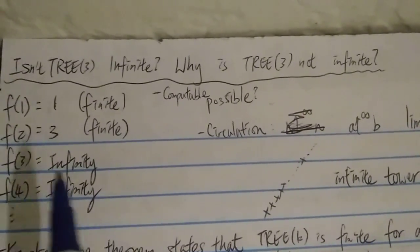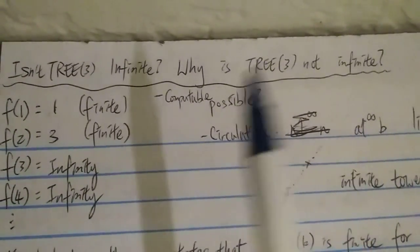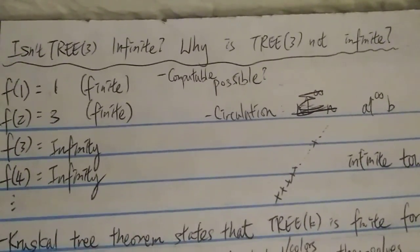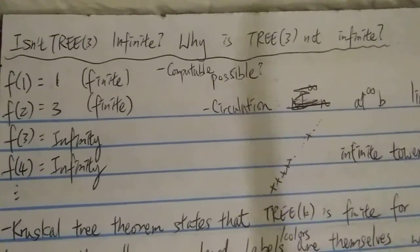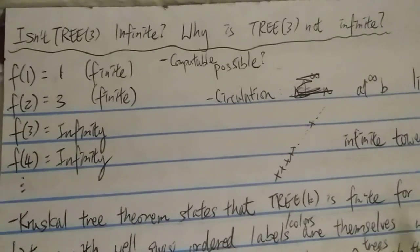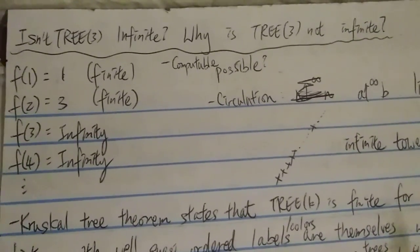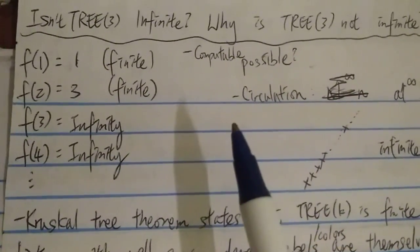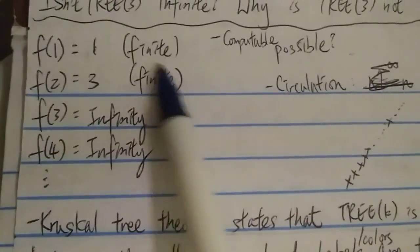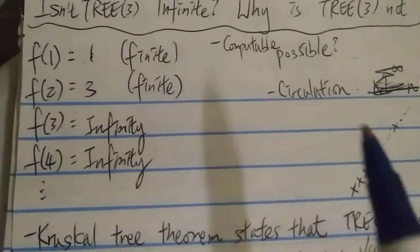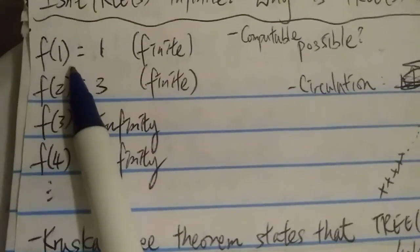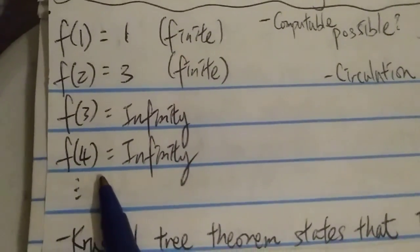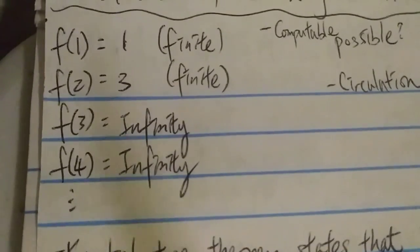Today we're going to talk about why TREE(3) is not infinite. This is something frequently asked by commenters online, because TREE(3) seemingly is so much bigger than Graham's number or something like that. So why is it not infinite? Before we try to answer this, let me ask: is this function possible — f(1)=1, f(2)=3, f(3)=infinity, f(4)=infinity, and so on?